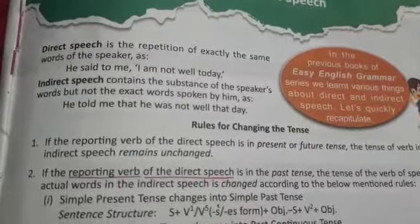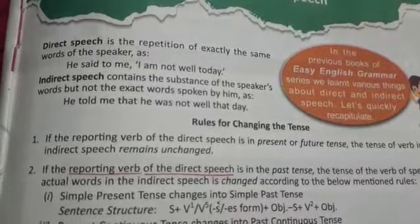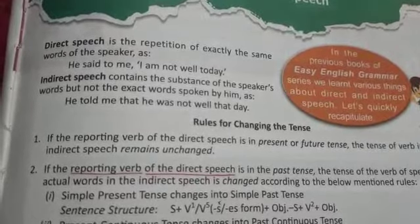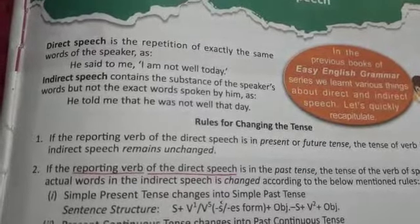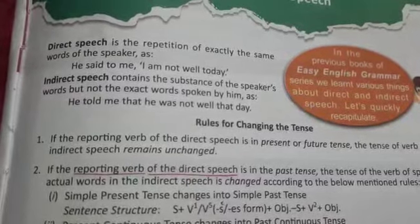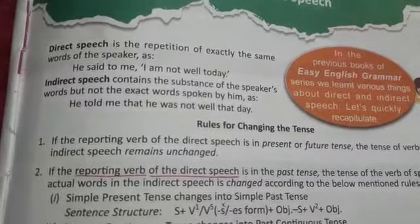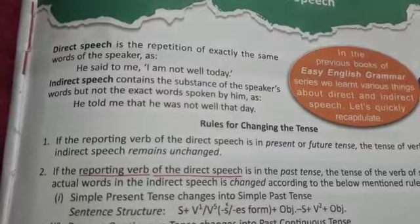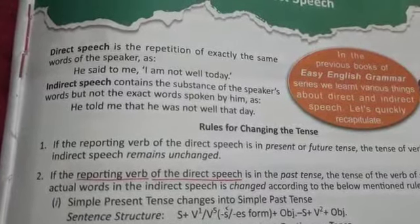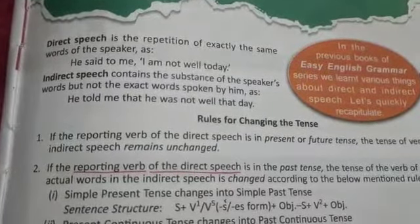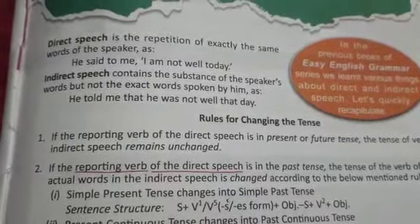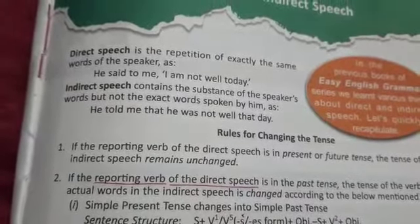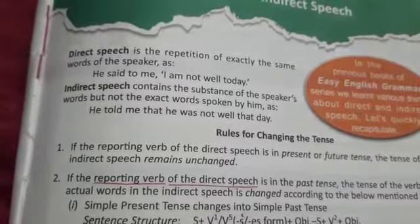Another example: He said to me, 'I am not well today.' Students, you can see in this example, 'I am not well today' is the exact word said by the speaker — that is direct speech. The indirect speech form is: He told me that he was not well that day. So this was your direct speech and indirect speech.